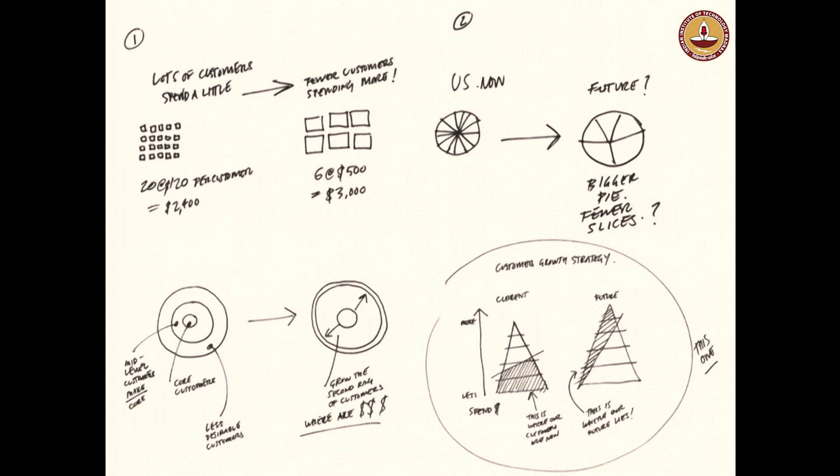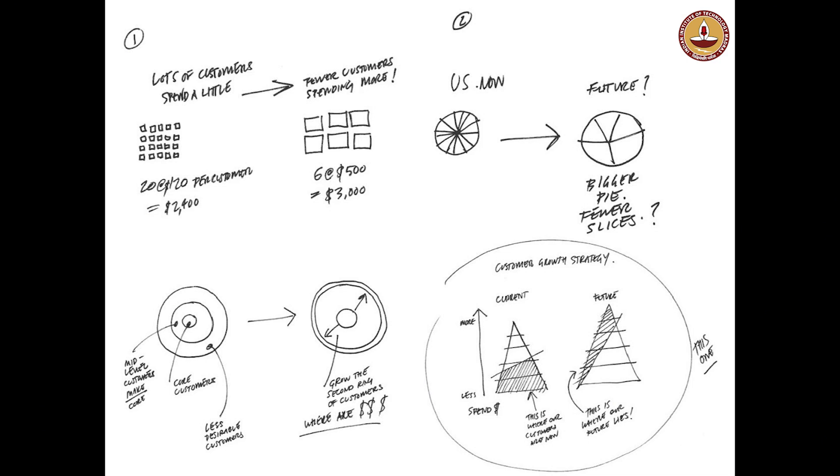So you have the market which is like that, they want to become like that. Or you have concentric circles: you have core customers, then you have mid-level customers, then you have less desirable customers. So what they have is that most of their customers are less desirable customers. And then you have this other—so they are saying let us increase this core customers, make them bigger, and then reduce them smaller. Again, another way to look at the same thing, representing: here is where most of our customers are, let us get them here.